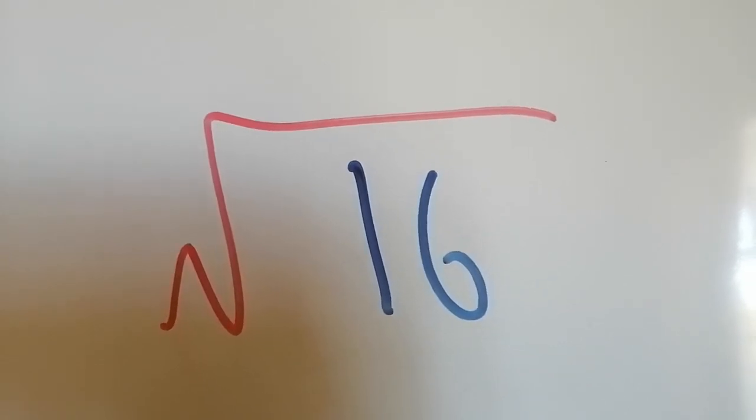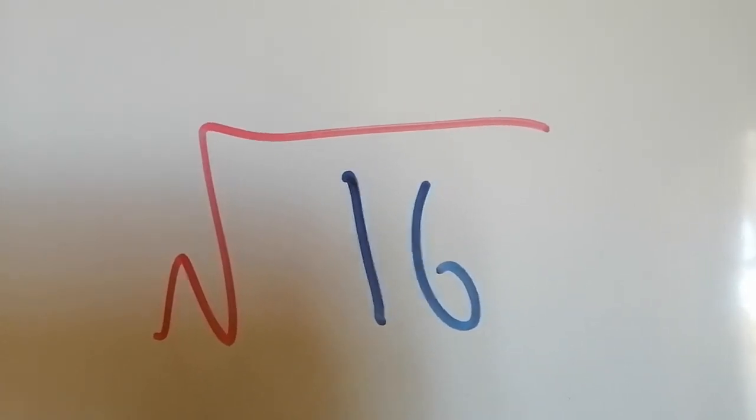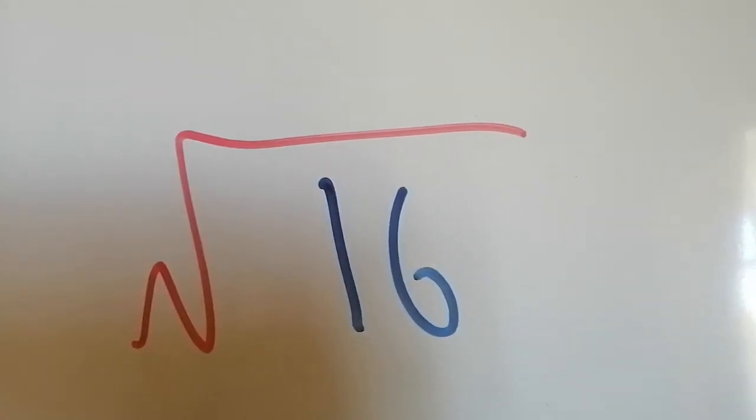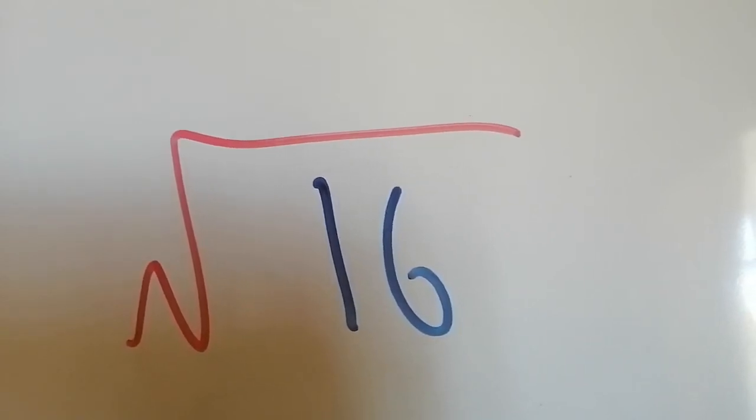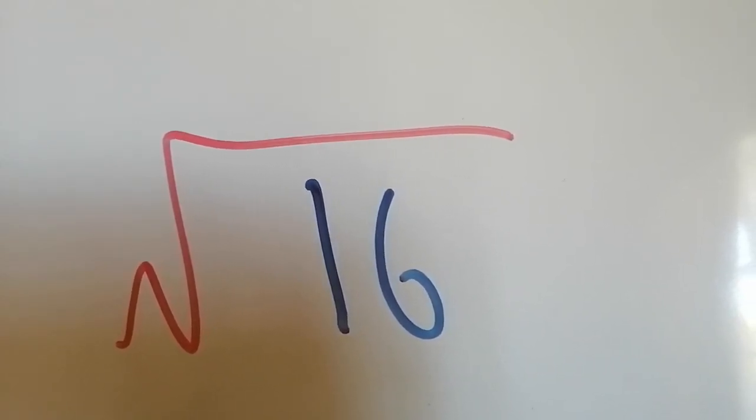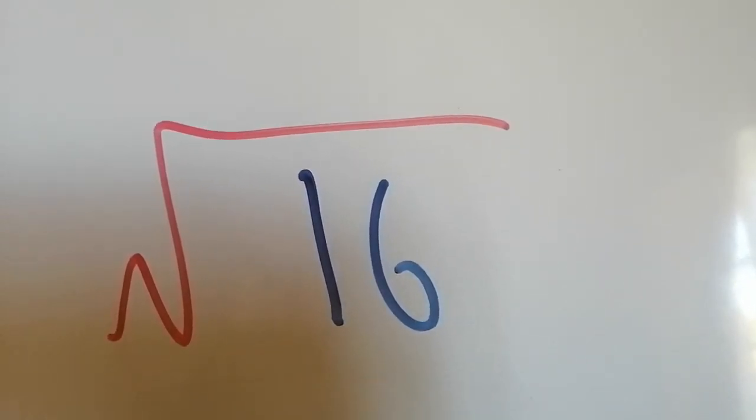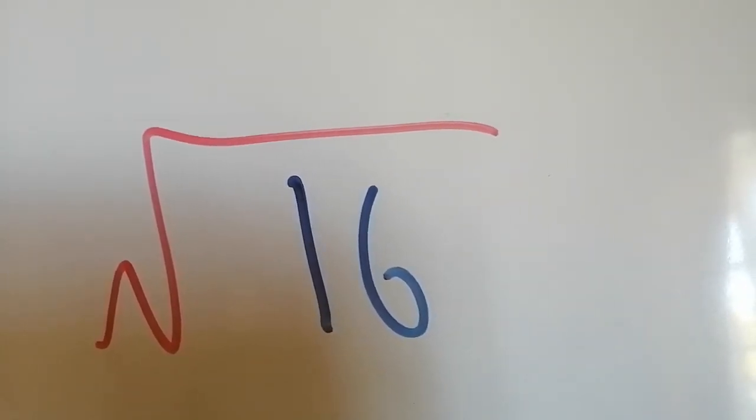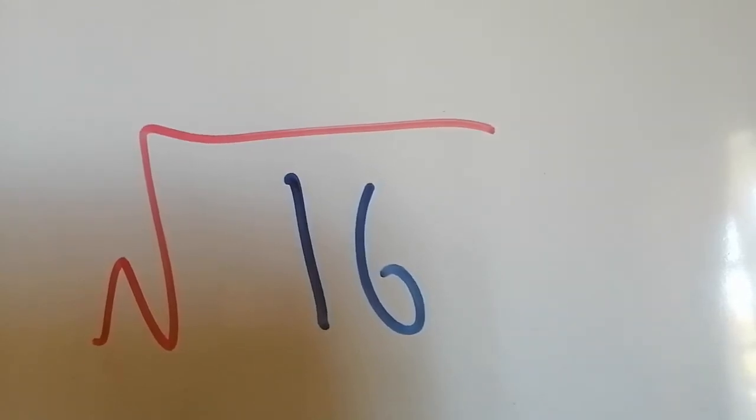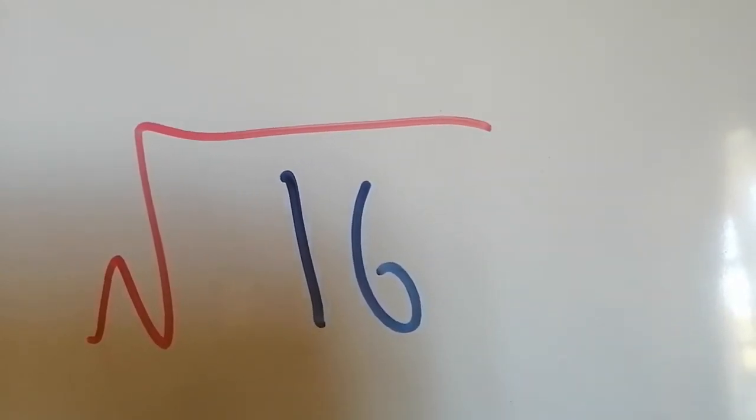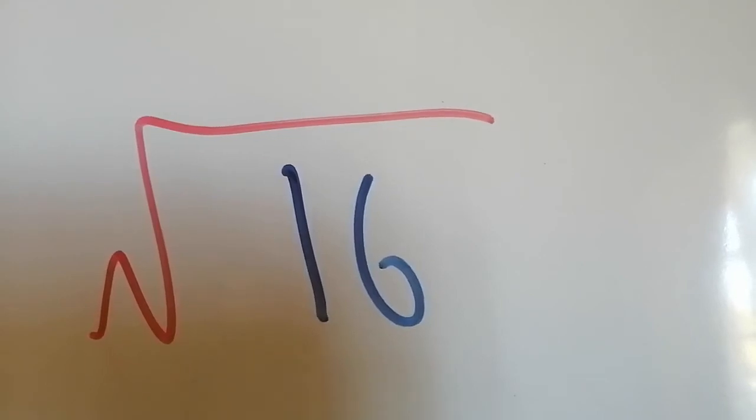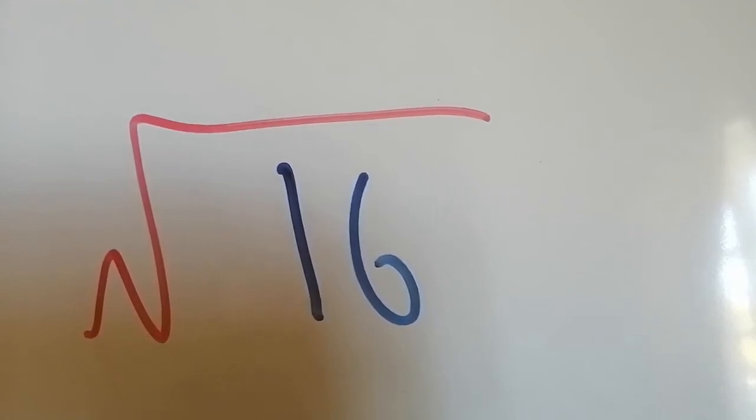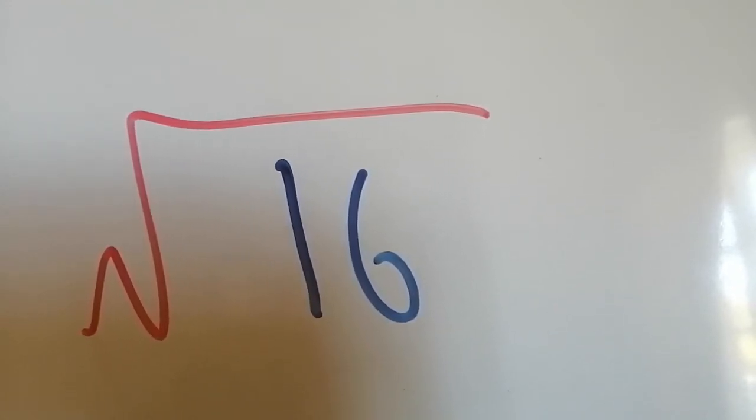When we need to find the root of any number, we write our sum out like this. The sign that is written above the number 16 tells us that we are looking for the root number of the number that we find beneath the sign, which in this case is 16, and we will read it as the square root of 16. Because there is no number written on the outside of the sign, we take it for granted that it is the square root, which in other words means we are looking for a number that when multiplied by itself two times gives us the number 16.